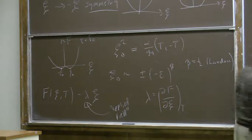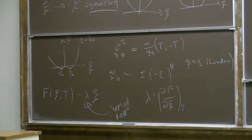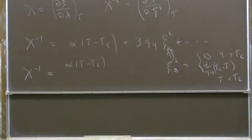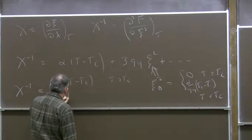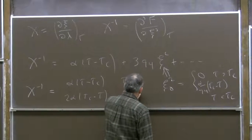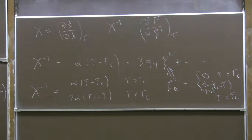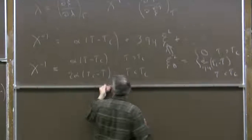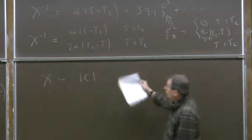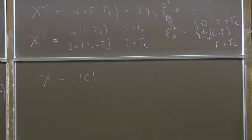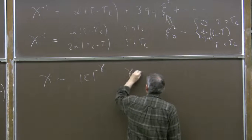What Landau theory tells us about the inverse susceptibility near the critical point is that it vanishes linearly in the deviation from the critical temperature when we're in the high temperature phase, and as 2 alpha times tau_c minus tau when approaching from below. Either way, the susceptibility itself is diverging at the critical point. So Landau theory says the susceptibility goes like absolute value of epsilon to a negative power, minus gamma, and Landau says gamma is equal to 1.